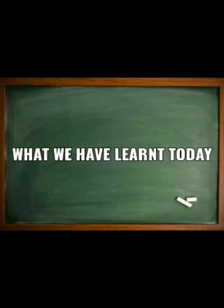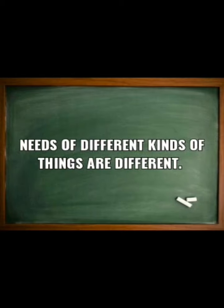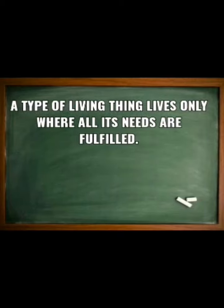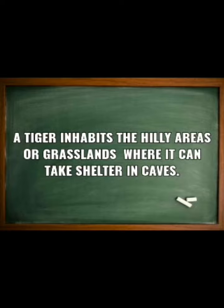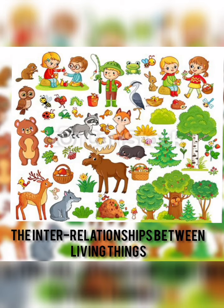Let's do a quick revision of what we have learnt today. We have many needs such as food, water, shelter, clothes and air. All these needs are fulfilled by the environment. Needs of different kinds of living things are different. A type of living thing lives only where all its needs are fulfilled. A tiger inhabits the hilly areas of grassland where it can take shelter in caves. Kindly solve the given worksheet and submit it to your respective WhatsApp group. Thank you, take care. We shall continue the next topic in the next period.